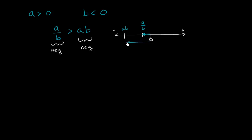But because they're both negative and we're talking about distances from the left of 0, the one that has a smaller distance to the left of 0 is less negative and is therefore a greater number.